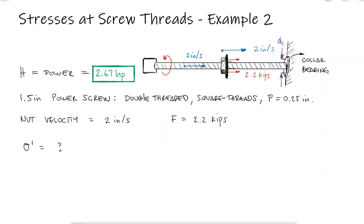This is the second example for the stresses at screw threads main video, link below. Based on the process that we covered during that main video and also during example 1, we know that the critical stress state within the threads of the screw will be subjected to a torsional stress, an axial stress, a bending stress, and a tangential shear stress.